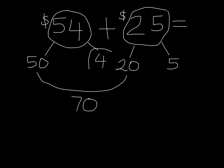Now I'm going to add the ones, which is the 4 and the 5. I know that 5 plus 5 would give me 10, so 5 plus 4 would give me 9. Now I have to add 70 plus 9, and that equals 79.